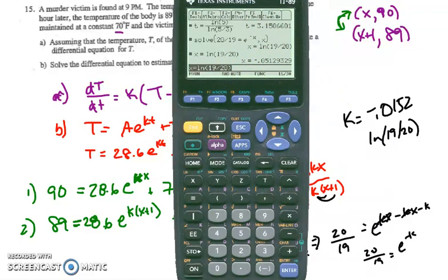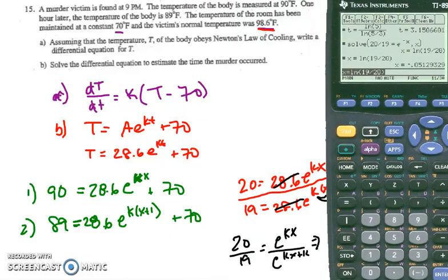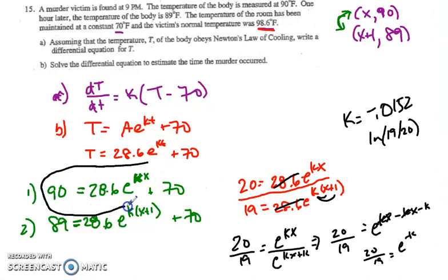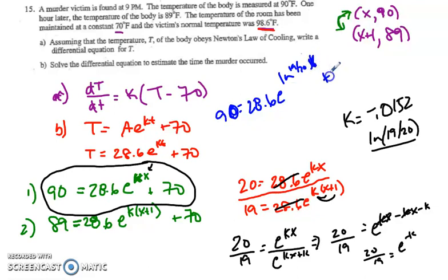So now the next question is they really want to know when the murder occurred. So let's go back to our original equation that had the very first value of just time equals x when we found the body. And let's plug in the k value that we have here. So when I do that, I'm going to get that 90 equals 28.6e^(ln(19/20)x) plus 70.